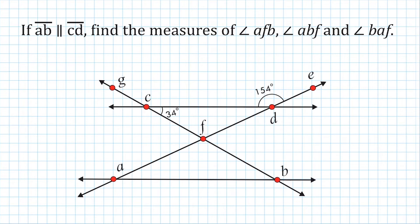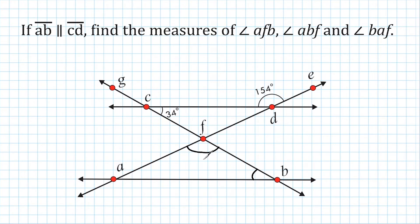So in this problem, it says that line segment AB and line segment CD are parallel to each other. We have to find the measures of angle AFB, angle ABF, and angle BAF. Angle AFB is located here — we start with A, then go to F, and then to B. The middle letter is closest to the angle in question. Essentially, we are finding the angle measures of the three angles of this triangle.